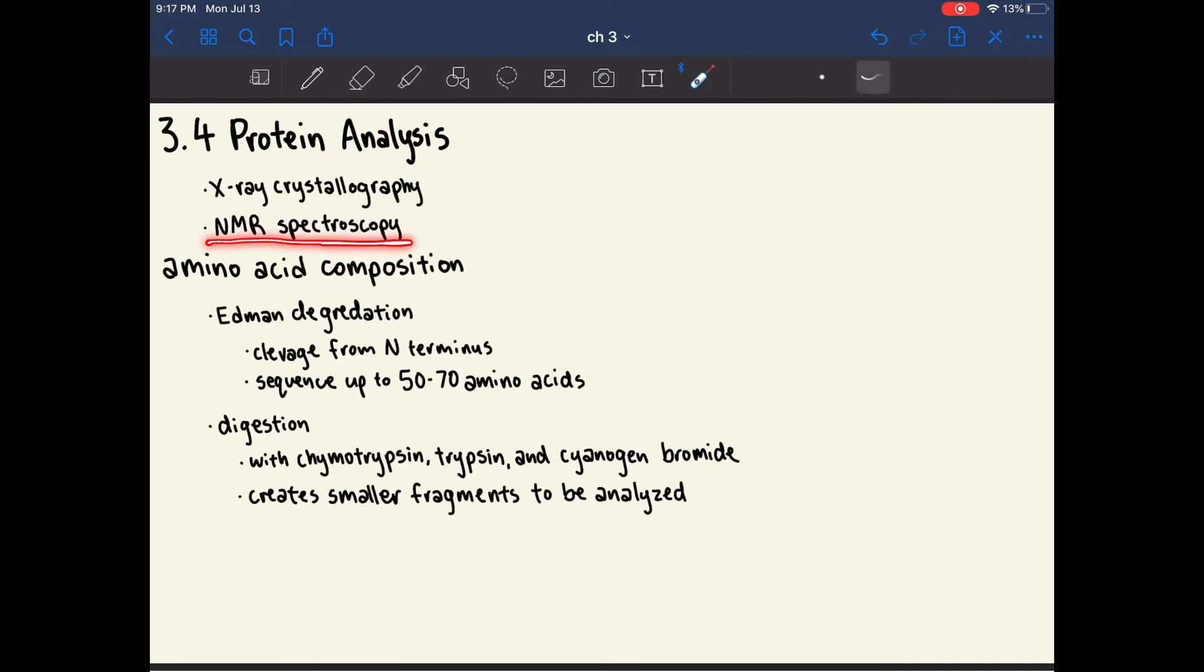Another method is NMR spectroscopy, which you should be familiar with from organic chemistry. The amino acid sequence or the amino acid composition of a protein can be yielded using Edman degradation. Edman degradation is a process that cleaves amino acids one by one from the N-terminus, and this can sequence polypeptides that are up to 50 or 70 amino acids long. If you have a longer protein, it must first be digested using chymotrypsin, trypsin, and cyanogen bromide. This can break up a longer protein into smaller fragments that can be analyzed with Edman degradation.